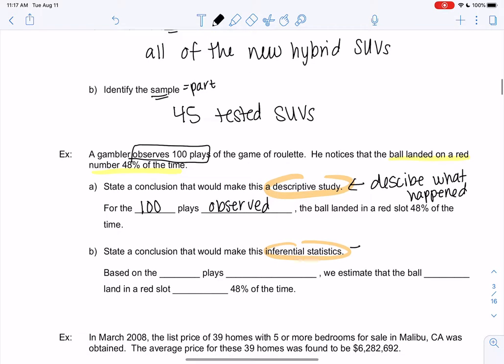Inferential, now we're going to make a conclusion about all of roulette. So we're going to make it a bigger conclusion. So based on the 100 plays observed, we're no longer describing only them. We estimate that the ball will land in the red about 48% of the time.